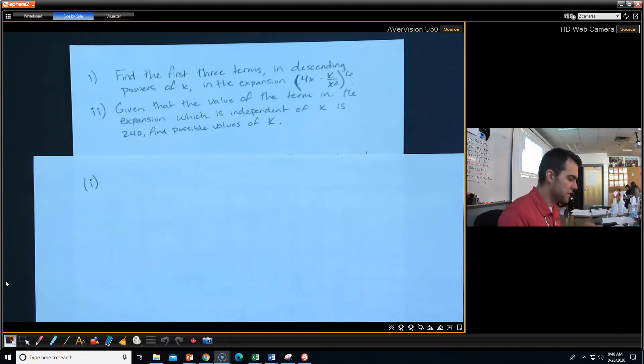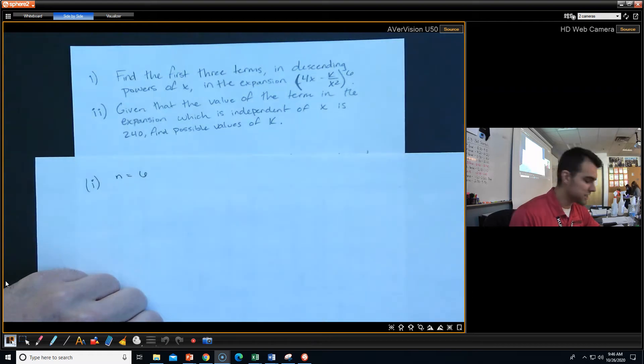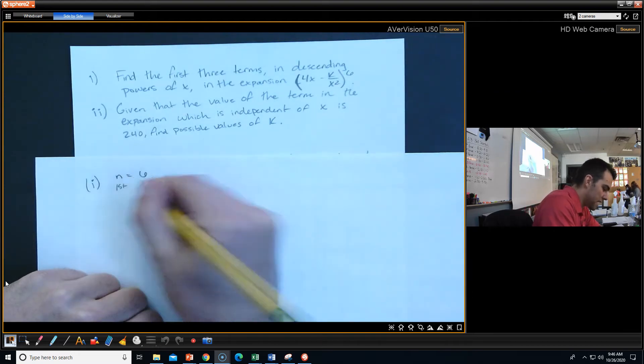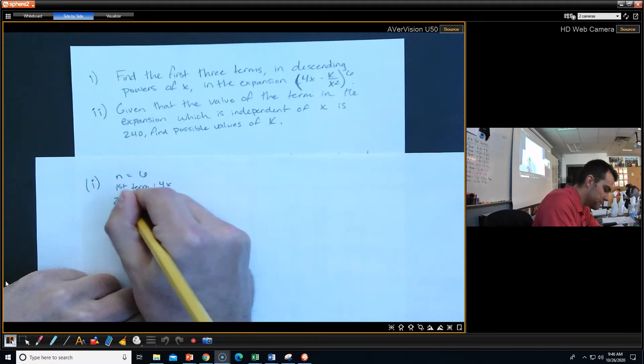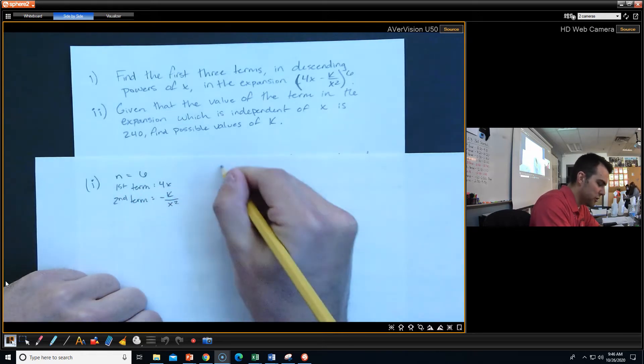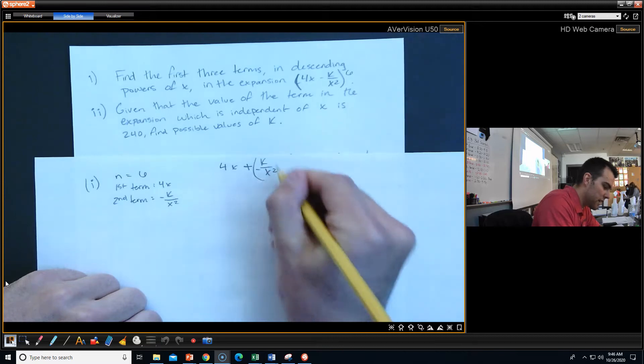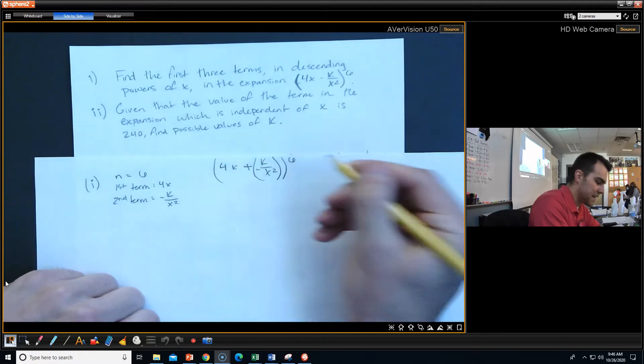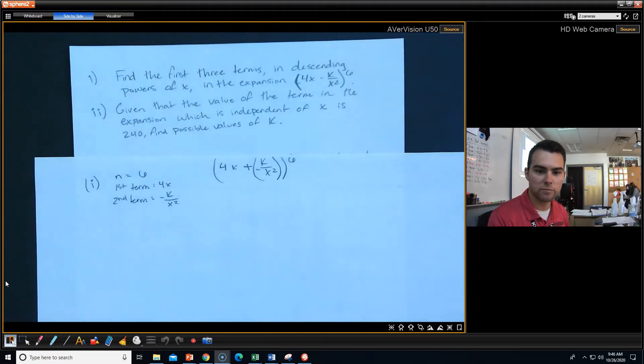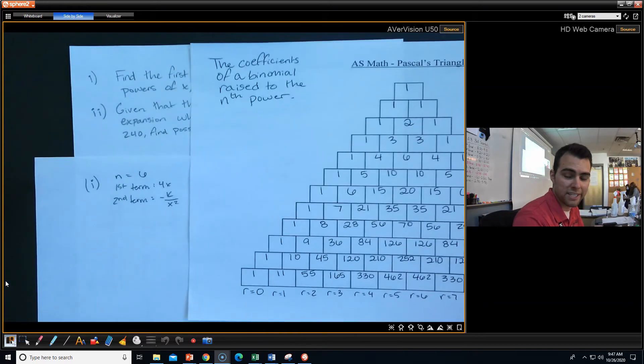Now, we only need the first three terms, but we're still going to utilize that same pattern that we've been working with. So again, I'll start out with n equals 6. We're using those coefficients. My first term is 4x, and my second term is going to be that negative k over x squared.